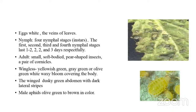The wingless female aphid is yellowish green, gray, or olive green in color with a white waxy bloom covering the body. The winged female is dusky green with a dusky green abdomen and dark lateral stripes separating the body segments. Male aphids are olive green to brown in color.